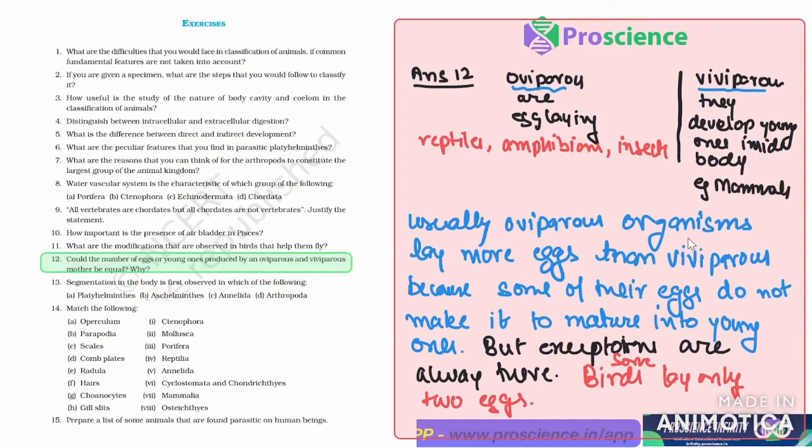Usually it is the case - amphibian, reptile, insects ho dekhe, so bohut saray eggs produce karte. Why? Because they need to take care of them. Some of them get eaten by predators and some of them get damaged, etc. So this is the reason why oviparous lay more eggs than viviparous.